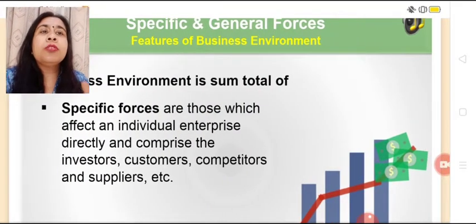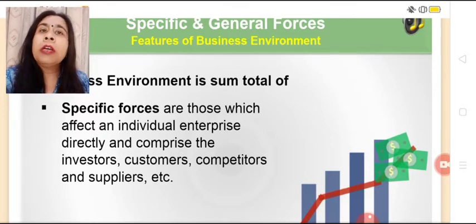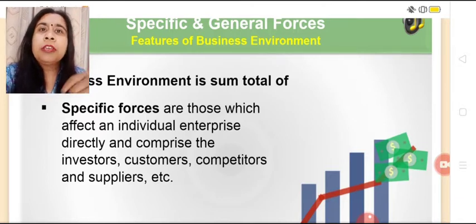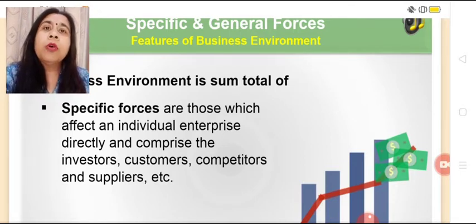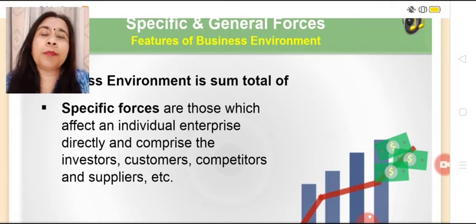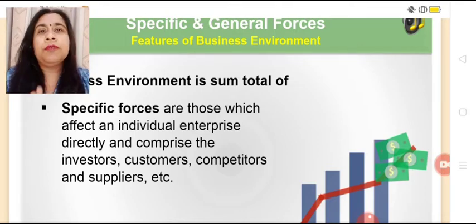The second feature is that it is related to specific as well as general forces. Specific forces of business environment are those which affect an individual enterprise directly, and these comprise of investors, customers, competitors, suppliers, and government. My customers will affect me; investors who withdraw money affect me; competitors affect me; and suppliers, if they increase the cost of raw material, affect my business.